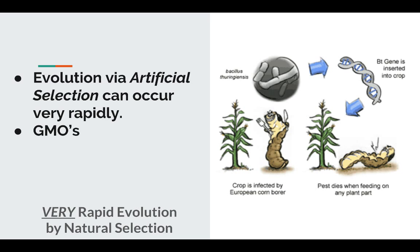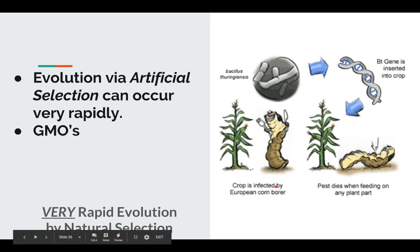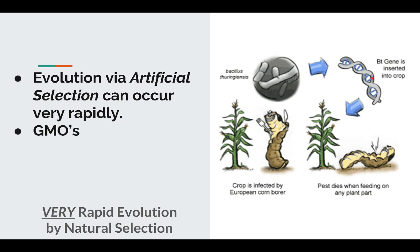Believe it or not, things can evolve even faster than rapid evolution. One example is through genetically modified organisms. In corn and cotton especially, there's a bacteria found in soil called the Bt gene that does a very good job of keeping away insects. What they do is insert it into the genes of corn or cotton, so instead of the corn being infected by the European corn borer, which would eat and decimate the crop, any organism that tries to eat it will die because that gene is inserted into the crop.